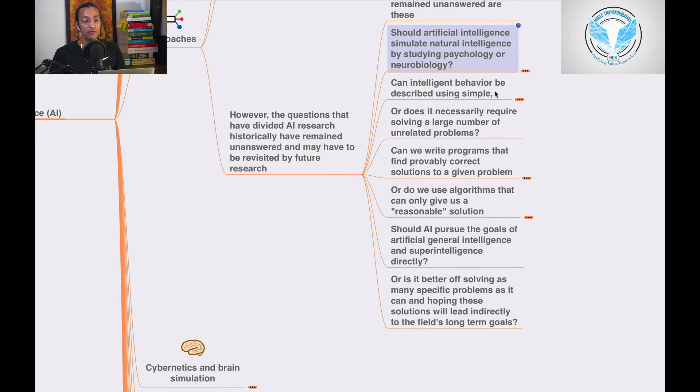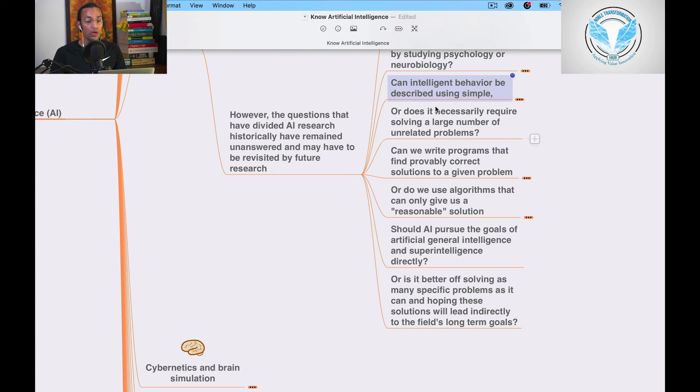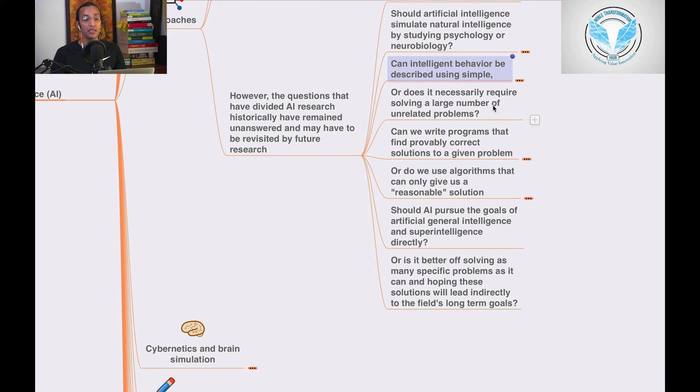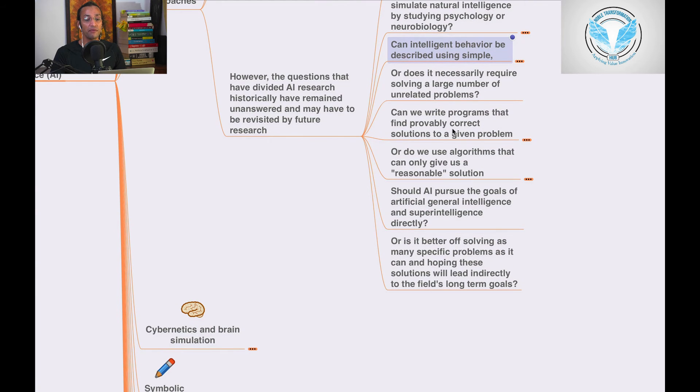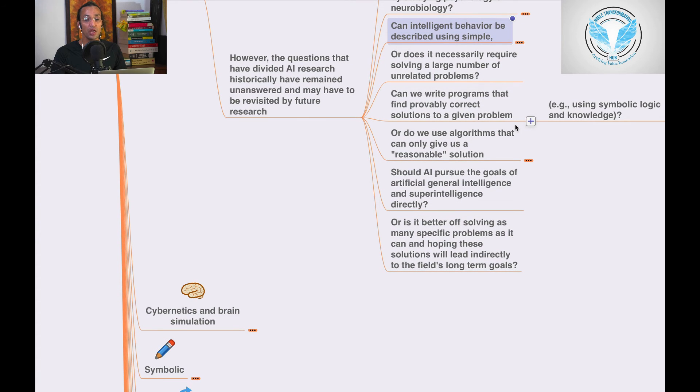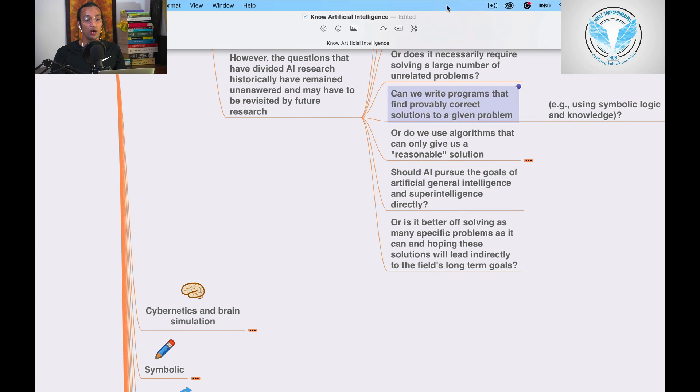Can intelligent behavior be described using simple, elegant principles such as logic and optimization, or does it necessarily require solving a large number of unrelated problems? Can we write programs that find probably correct solutions to given problems using symbolic logic and knowledge?